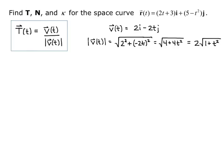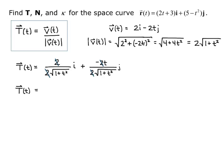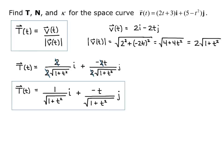That's my simplified magnitude of velocity. Now I put that into the formula for unit tangent. Capital T of lowercase t equals 2 over 2 square root of 1 plus t squared times i, plus negative 2t over 2 square root of 1 plus t squared times j. The 2's cancel, so the unit tangent vector T of t equals 1 over square root of 1 plus t squared i, plus negative t over square root of 1 plus t squared j.